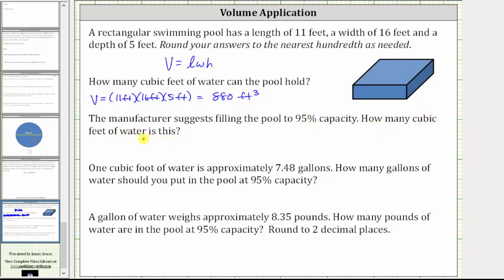To answer this question, we need to find 95% of 880 cubic feet. To find the percent of a number, we convert the percent to a decimal and multiply.